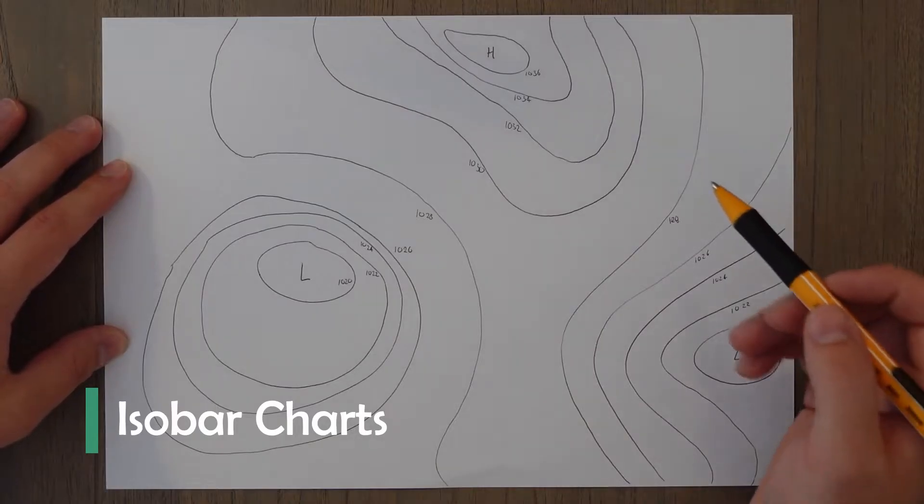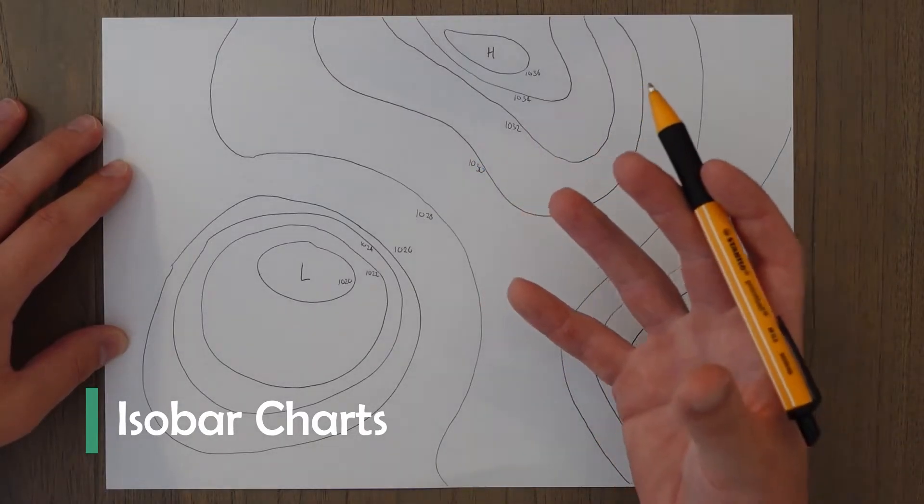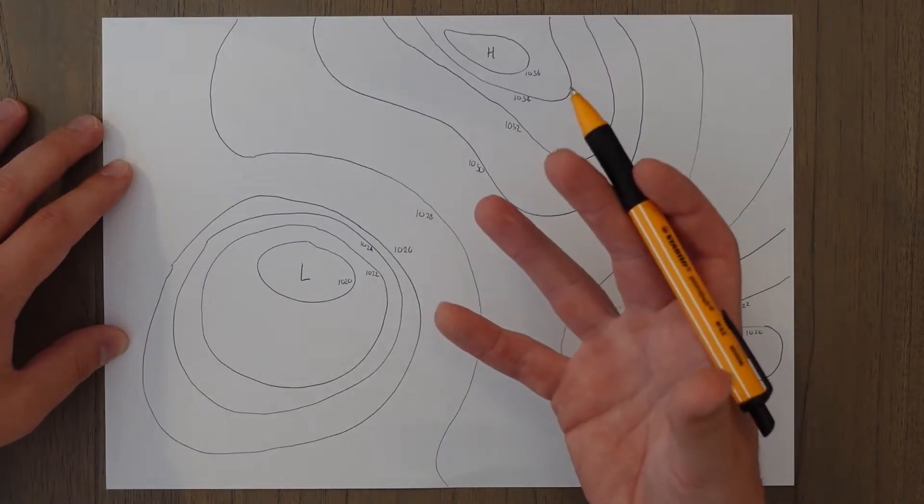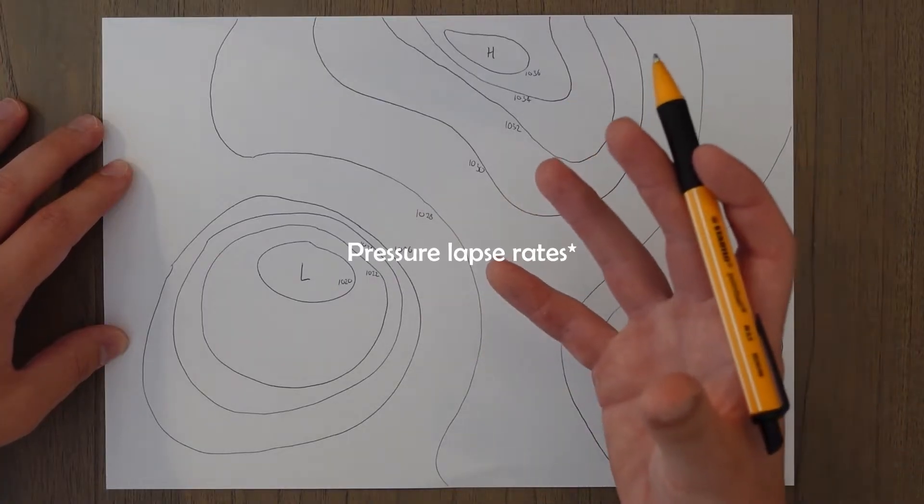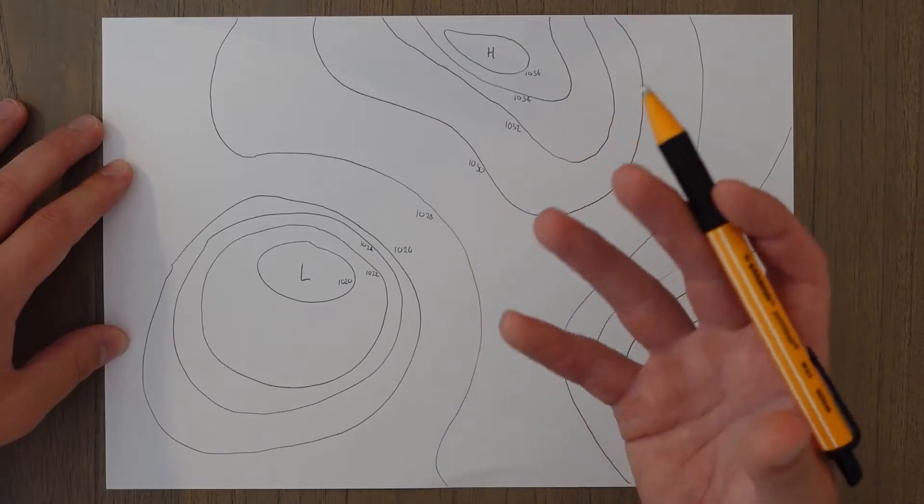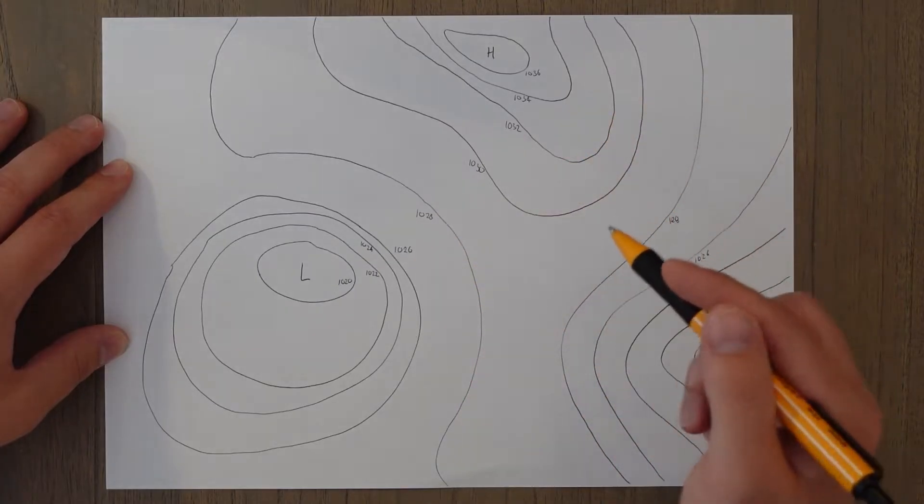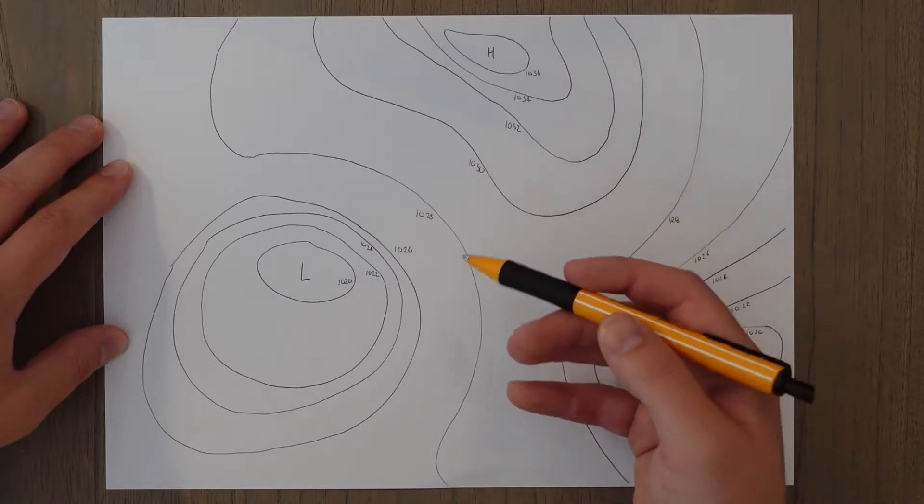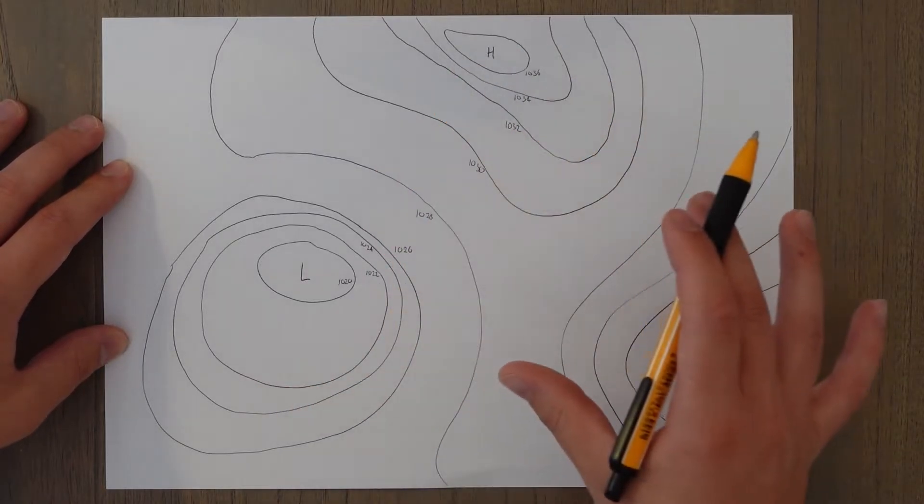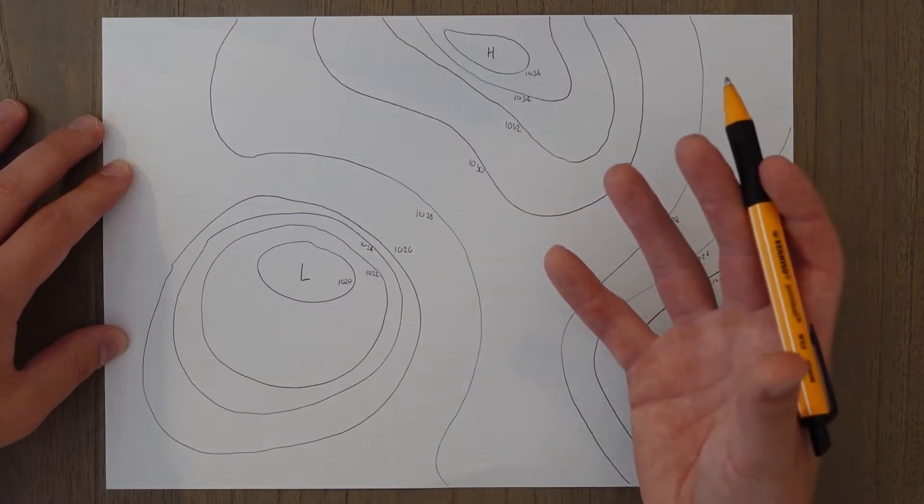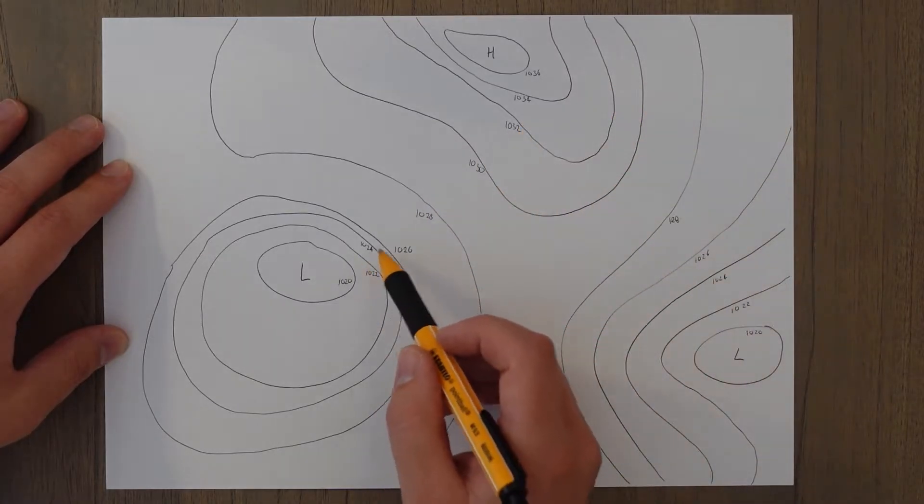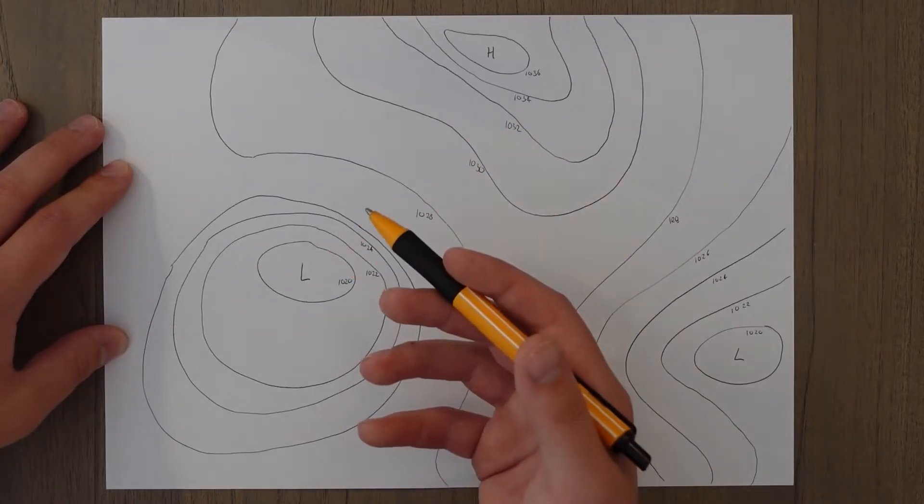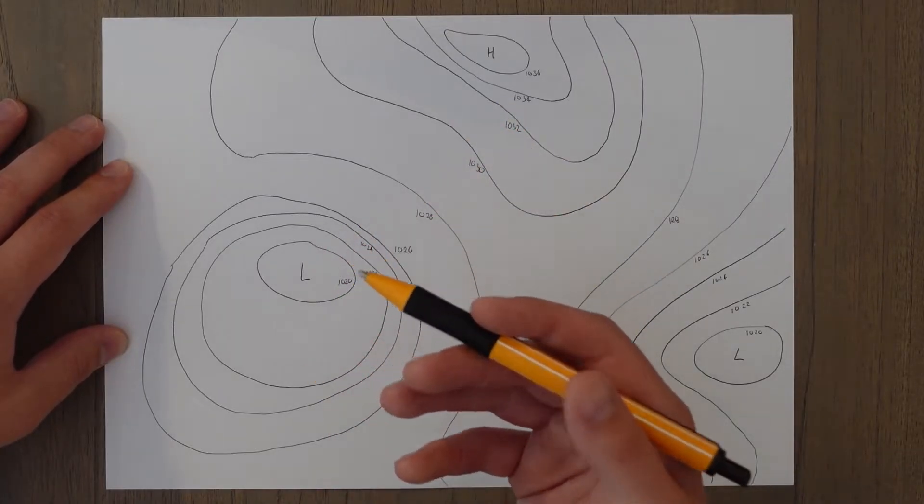Isobar charts show lines of equal pressure at mean sea level, either measured directly at mean sea level or calculated using temperature lapse rates and taking into account any temperature variations. Usually these lines are spaced two or four hectopascals apart, and the best way to think of them is like terrain on a map. Where the lines are close together you would have a steeper hill or in this case you would have a faster change in pressure.